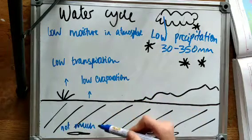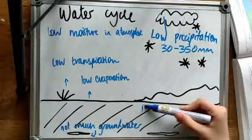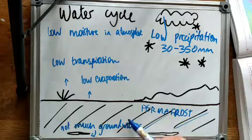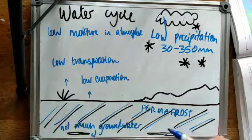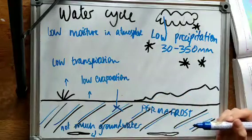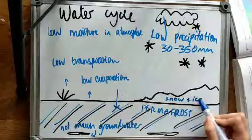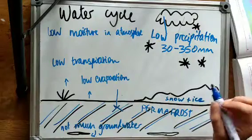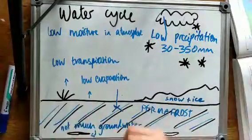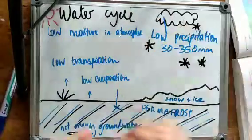The groundwater stores are also quite small. This is because the permafrost is a barrier to infiltration and percolation of water down into groundwater stores because it's really impermeable. Snow and ice make up a large proportion of the water store. It's mostly solid. There's not much available for vegetation growth.